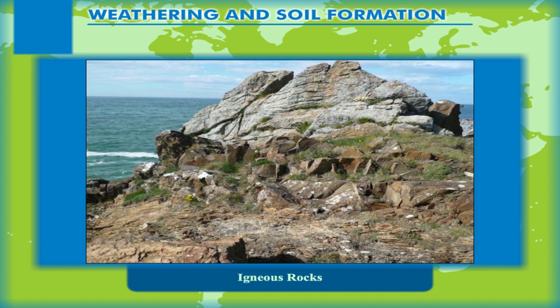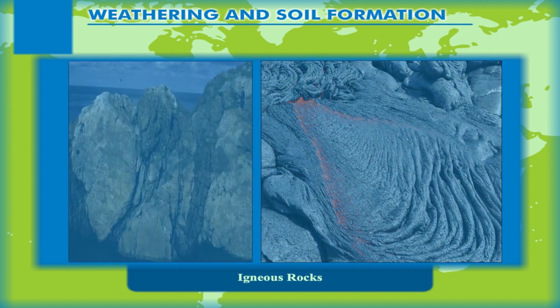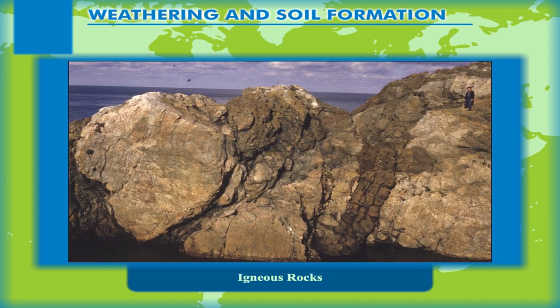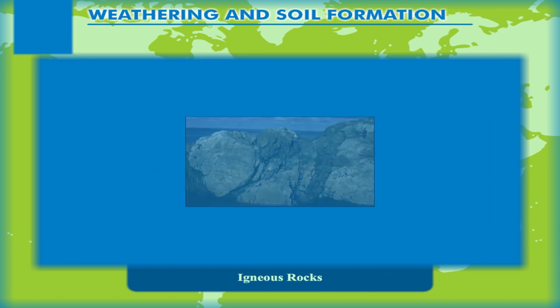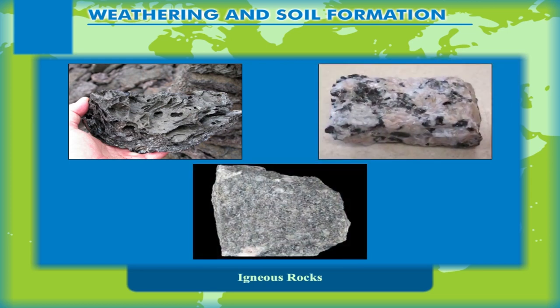Igneous Rocks. They are also called primary rocks because they are formed first. The word 'Igneous' is taken from the Latin word ignis, meaning fire. These rocks are formed by the process of solidification of molten rock material called magma. Igneous rocks are very hard. Most rocks found on earth belong to this category. They are good building materials. Examples of such rocks are Basalt, Granite, and Dolerite. They can be classified further into two subtypes.